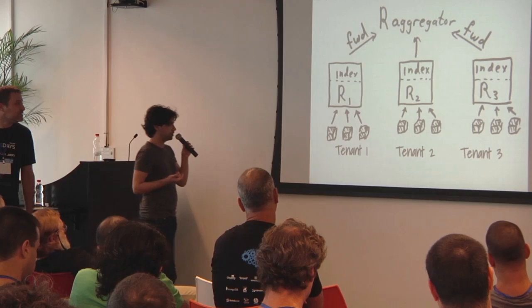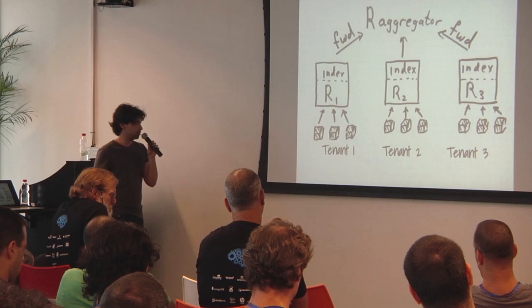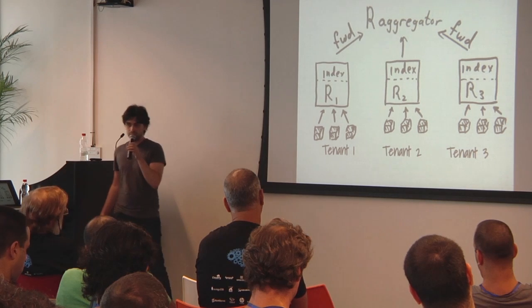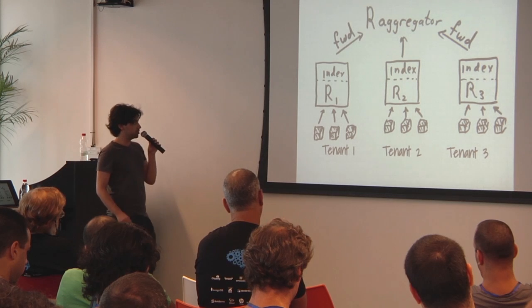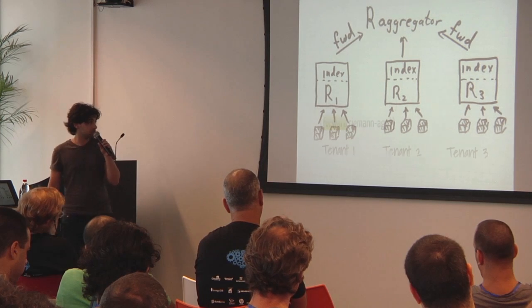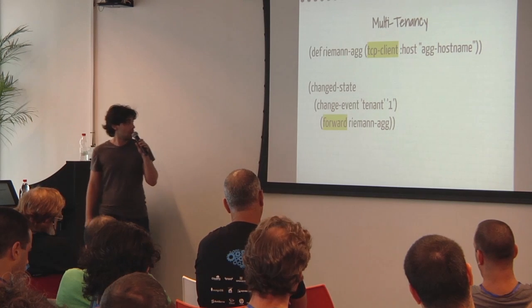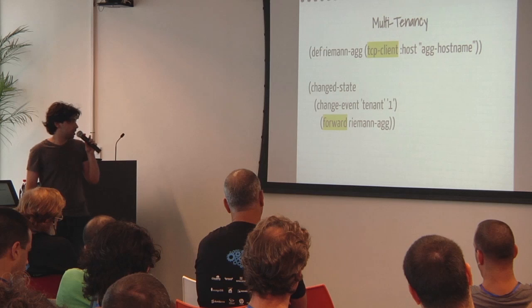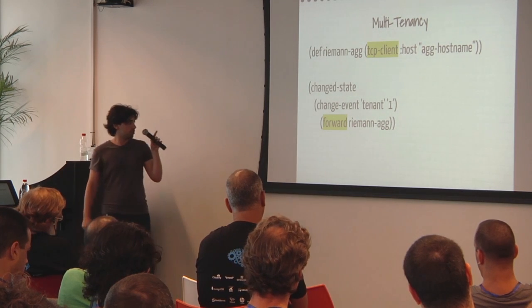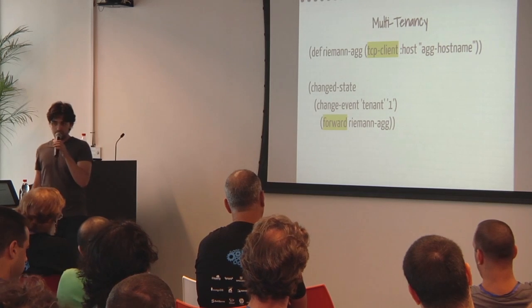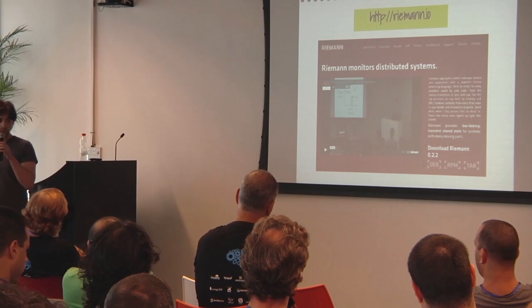Think of a multi-tenant environment where you need tenant-based isolation, but you also need an overall view of your entire system. You can have Riemann forward each tenant's state to a dedicated Riemann aggregator server. In code, we define the TCP client to connect to that aggregator. In each tenant server, we react to state changes, modify the event by adding a tenant key, and forward it to the Riemann aggregator, which will now store information on all tenants.